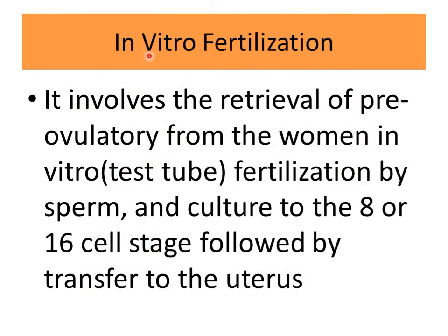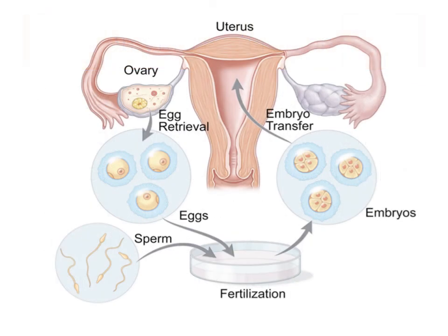In Vitro Fertilization (IVF) involves the retrieval of pre-ovulatory eggs from the woman, in vitro fertilization by sperm in a test tube, and culture to the 8th or 16th cell stage, followed by transfer to the uterus. Here you can see the ovary and egg retrieval process, then fertilization, and finally the embryos are transferred into the uterus.